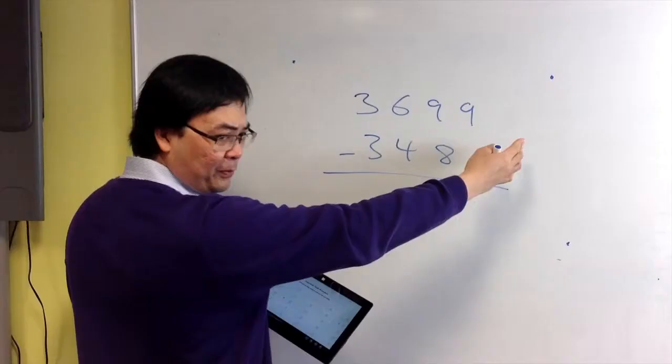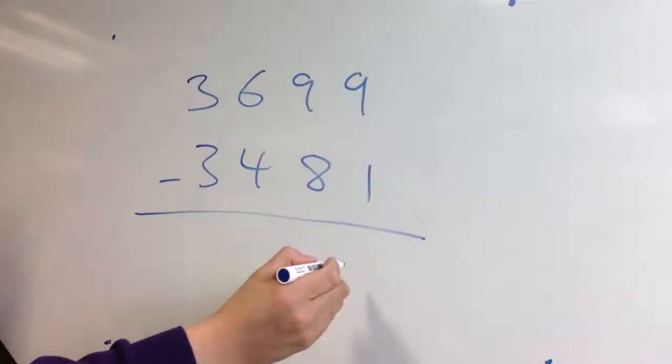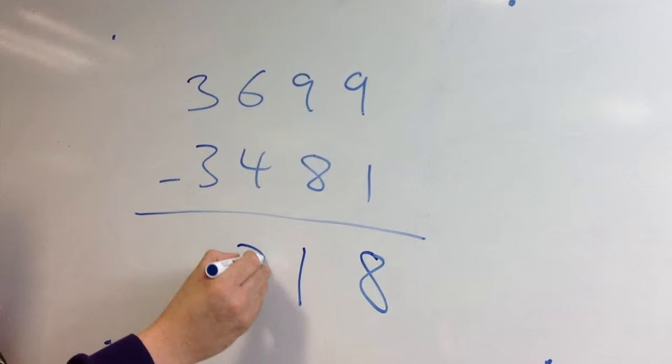We'll start from the right-hand side with the smaller numbers. So here 9 take away 1 is 8, 9 take away 8 is 1, 6 take away 4 is 2, and this is going to be 0.